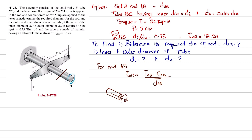The torque given is T = 20 kips·inch. This is point A and this is point B. In order to counterbalance it, we have T_AB. From the equilibrium condition, T_AB is counterclockwise and the applied torque is clockwise, so T_AB is equal to T, which is 20 kip·inches.